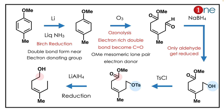Next, you are using sodium borohydride — it only reduces the aldehyde, because the aldehyde is very reactive and gets reduced to an alcohol. Next, you use tosyl chloride, which is a very good leaving group. If you then use lithium aluminum hydride, you achieve the desired product where the alcohol and OTs are removed. You achieve multiple products through Birch reduction, ozonolysis, and selective reduction.